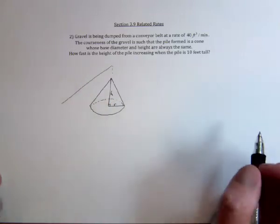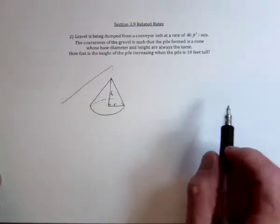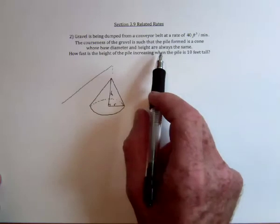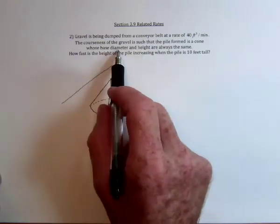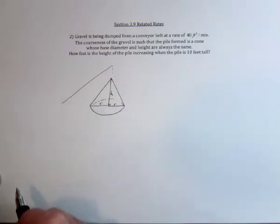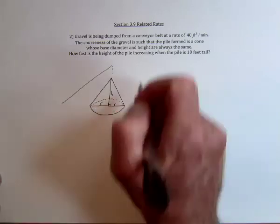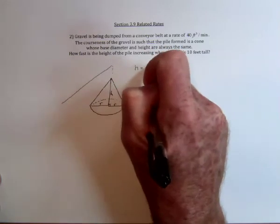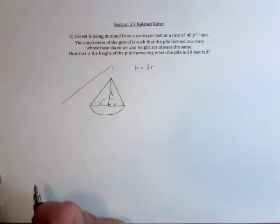We've got information such as the height and the diameter are always the same. So diameter would be two radii, so the height is equal to 2r. Next, it's being dumped out at a rate of 40 cubic feet per minute.